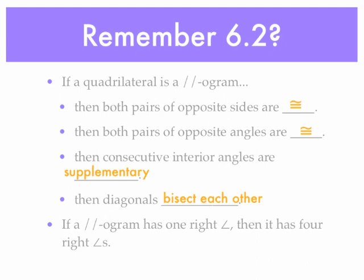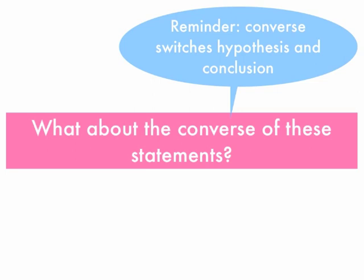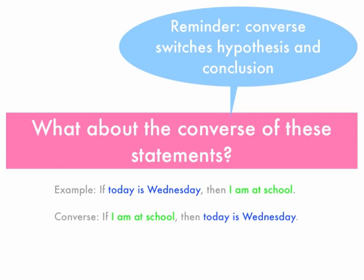Section 6.3 is all about whether the converse of these statements is true. The converse switches the hypothesis and conclusion of an if-then statement. For example, if we say 'if today is Wednesday, then I'm at school,' the converse would be 'if I'm at school, then today is Wednesday.' This example shows that it's not always true that the converse will have the same logical value as the original statement, but sometimes it is true.